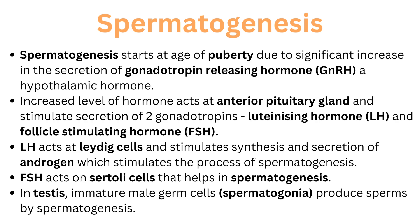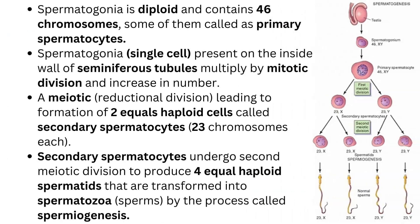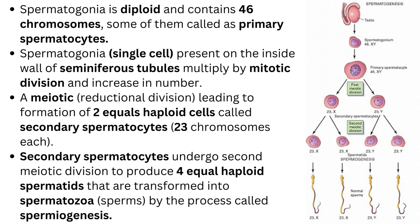Immature male germ cells, that is spermatogonia, produce sperms by the process of spermatogenesis. Please follow the diagram accordingly. Spermatogonia is diploid and contains 46 chromosomes. Some of them are called primary spermatocytes. Spermatogonia, a single unit called spermatogonium, is present on the inside wall of seminiferous tubules and multiplies by mitotic division to increase in number.